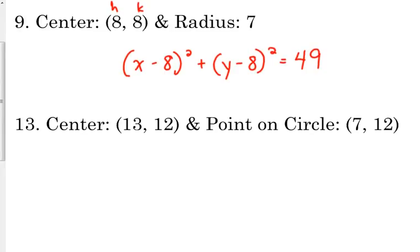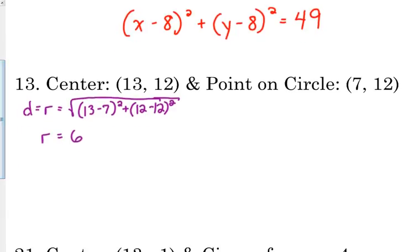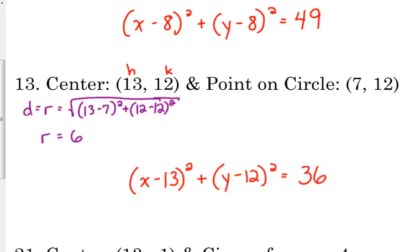Now, what if we're told the center and a point on the circle? We can use the distance formula. So the distance formula will allow us to find, I'm going to say D equals R, because the distance from the center to a point on the circle is the radius. So we've got 13 minus 7 squared plus 12 minus 12 squared. So this one looks easy. They're on the same line. That radius is 6. So the radius is 6. So when we plug it into the equation, we've got x minus, make sure that you use the center point and not the point on the circle. So x minus 13 squared plus y minus 12 squared equals 36, because we square the radius when we plug into our equation.